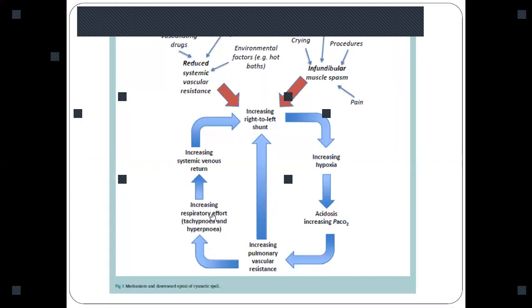Whenever there is increase in respiratory effort, there is more blood returning to the right side of the heart, increasing venous return and more blood coming to the right side of the heart, thus again leading to increased right to left shunt. All these things increasing right to left shunt occur basically because of right ventricular infundibular muscle spasm.